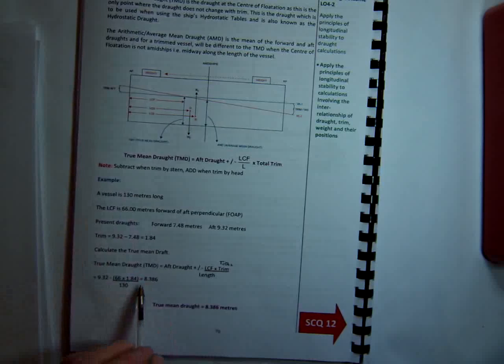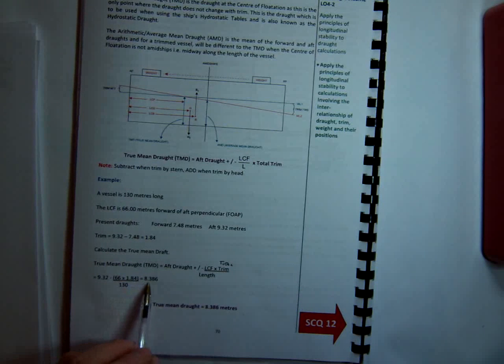So what we're doing, we're subtracting from the aft draft a proportion of the total trim, and that gives us an answer of 8.386. So in this instance, our true mean draft is 8.386.